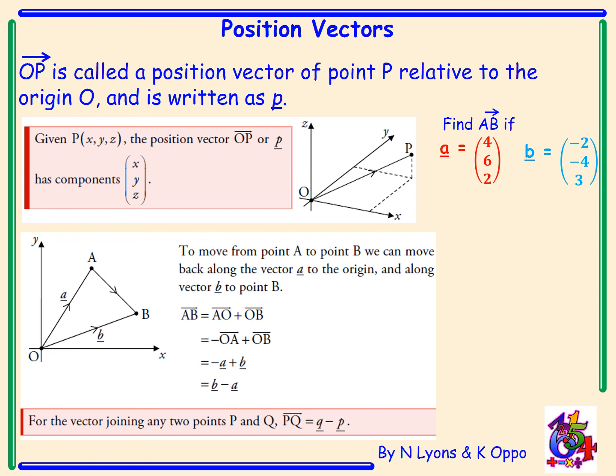Looking at this example we have two vectors a and b. To find AB we do b minus a, so we have negative 2 take away 4 to give us negative 6, negative 4 take away 6 to give negative 10, and 3 take away 2 is 1. So AB has components negative 6, negative 10 and 1.